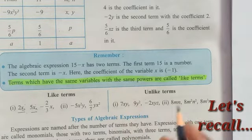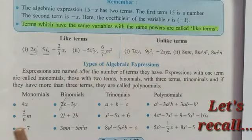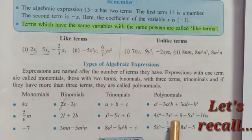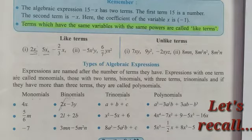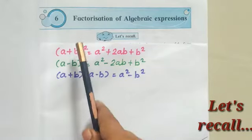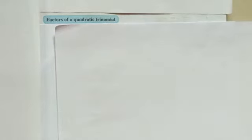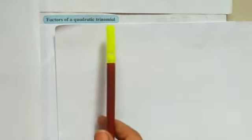You were also aware of terms like monomials, binomials, trinomials, and polynomials — four different types of terms we study in algebraic expressions. By using three most important formulas, we will factorize the terms. So let's start the first topic: factors of the quadratic trinomial.